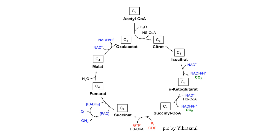Succinate is oxidized by its dehydrogenase, reducing FAD, giving fumarate. Fumarate makes malate, another dehydrogenase generates oxaloacetate. Waltz round the cycle, waltz round the TCA cycle today. Fumarate makes malate, another dehydrogenase generates oxaloacetate.